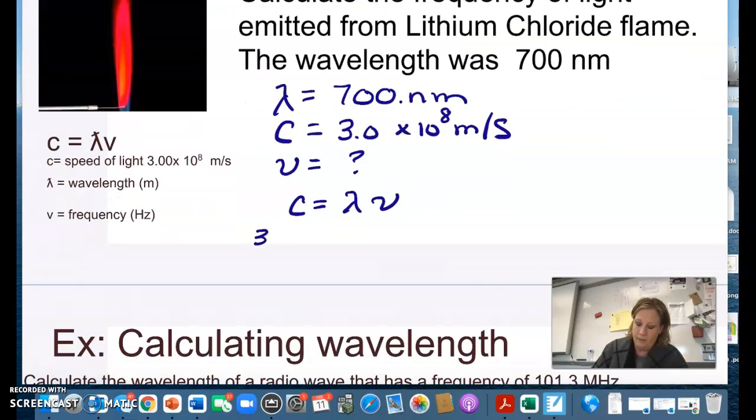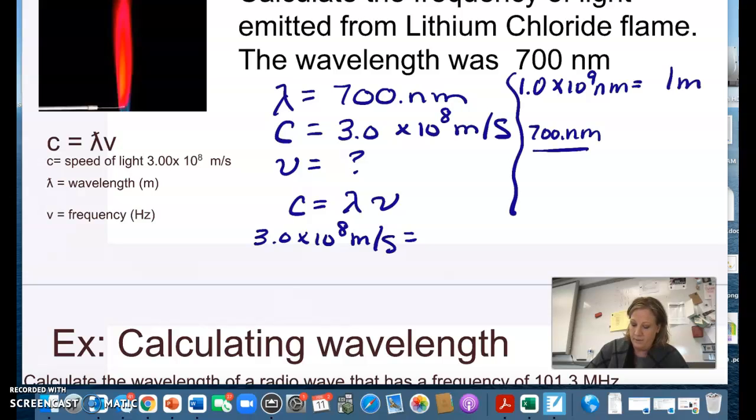So then we can just sub in our speed of light and then we do need to before we can sub in we would want to convert the nanometers into meters. And I know that there's 10 to the 9th nanometers in one meter so I could take my 700 and I'm going to multiply by 1 over 10 to the 9th. So really my wavelength in meters is 7 times 10 to the negative 7th meter.